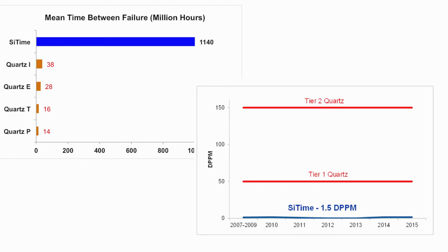In contrast, MEMS manufacturers use standard semiconductor batch-mode techniques, and the MEMS is vacuum sealed with an epi-seal process to ensure the structure is completely encapsulated and free from contamination. As a result, the DPPM and MTBF of SciTime oscillators are about 30 times better than quartz. They provide a very reliable technology platform which can endure severe environmental stresses and provide a high quality product for the end user.